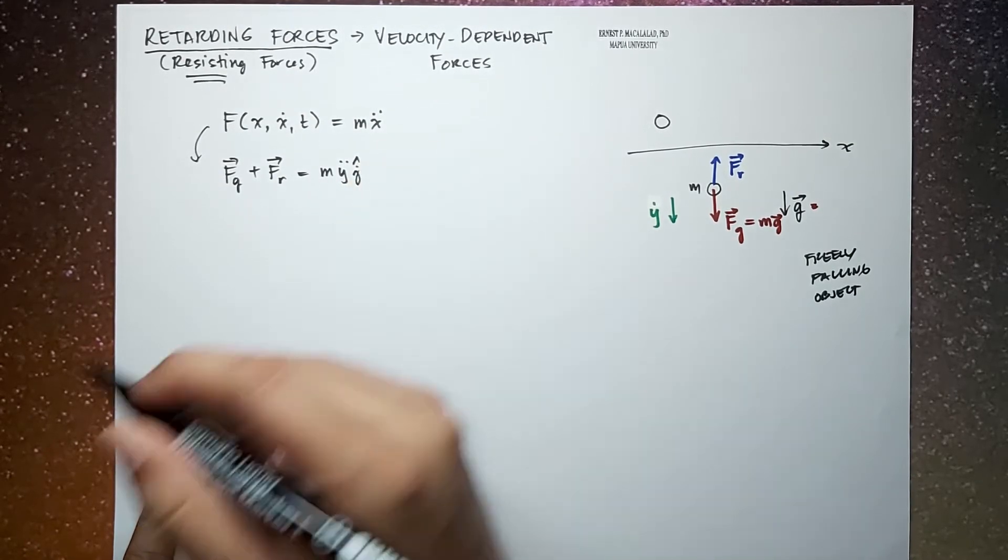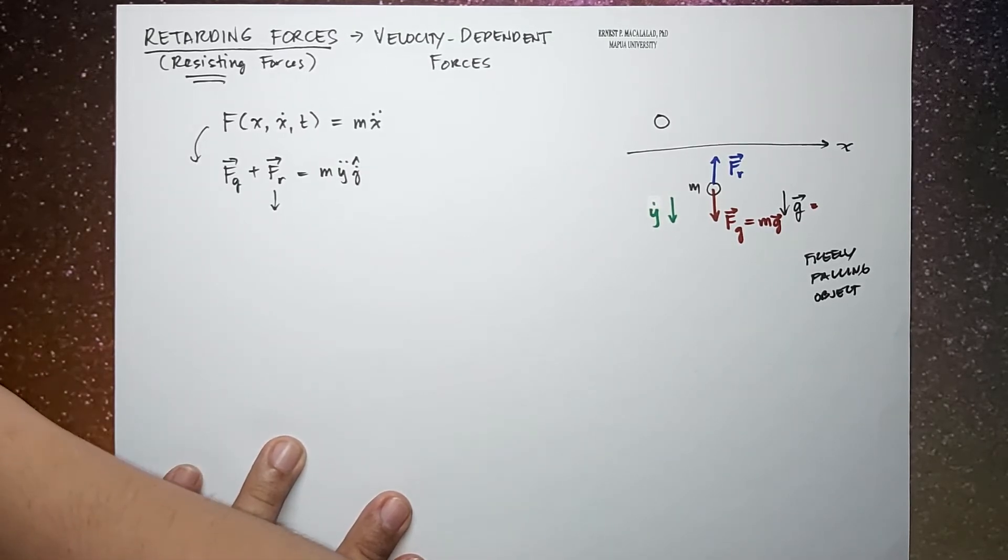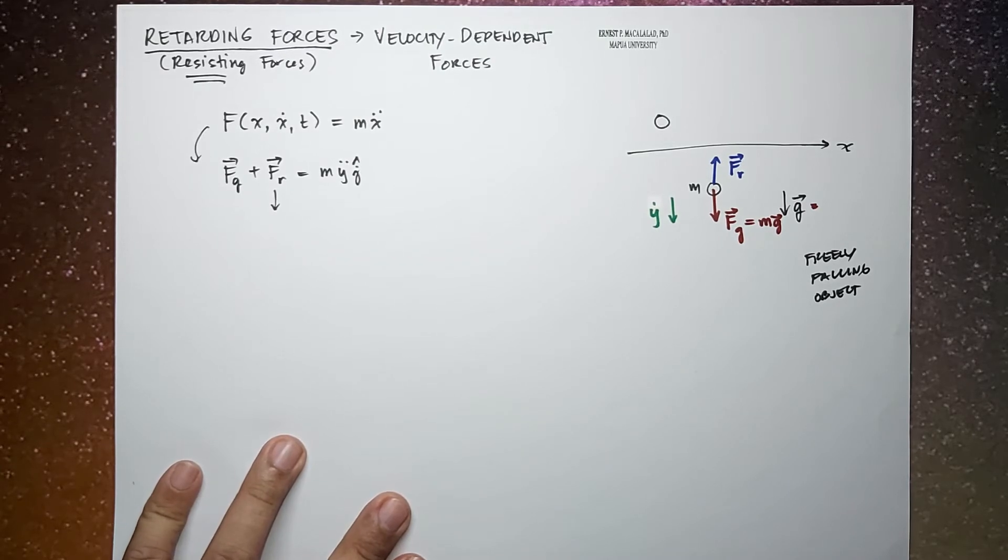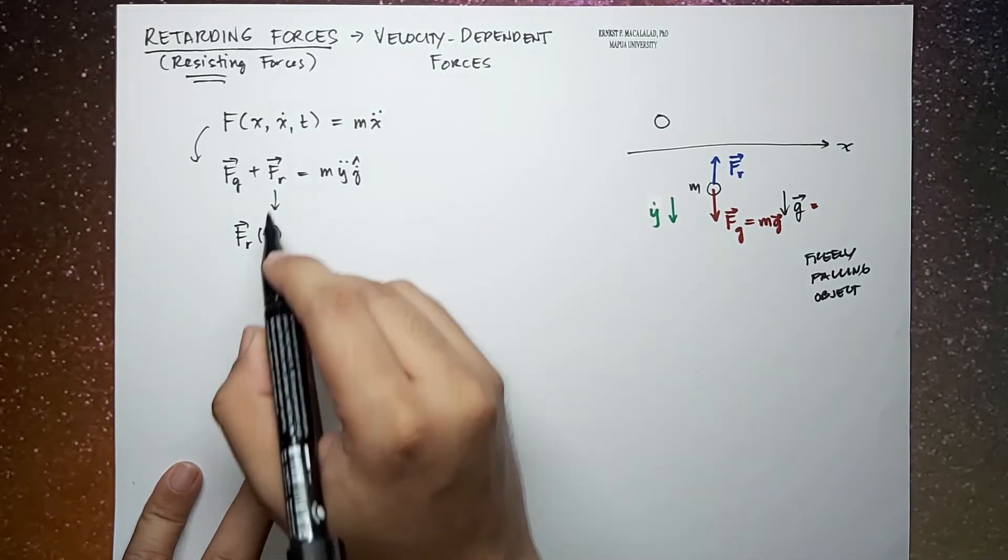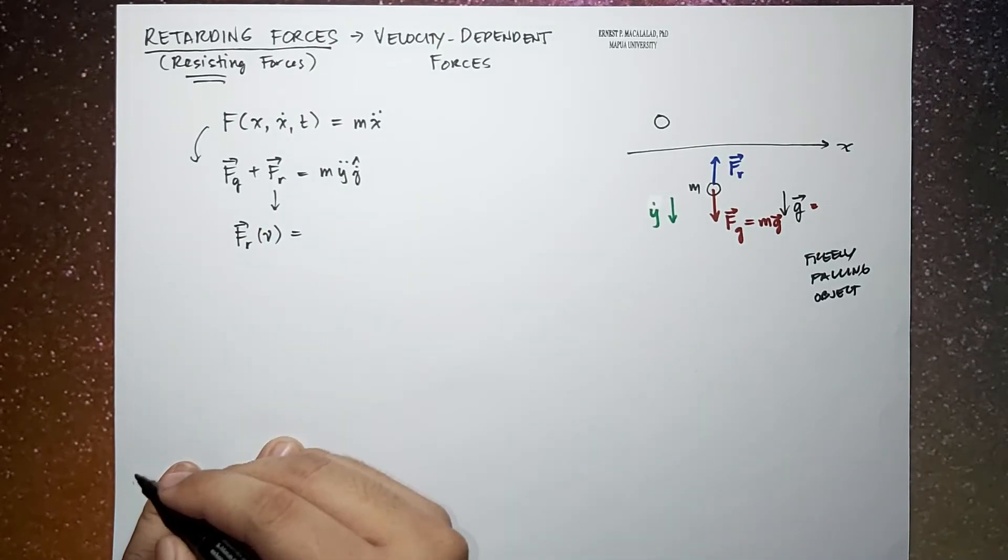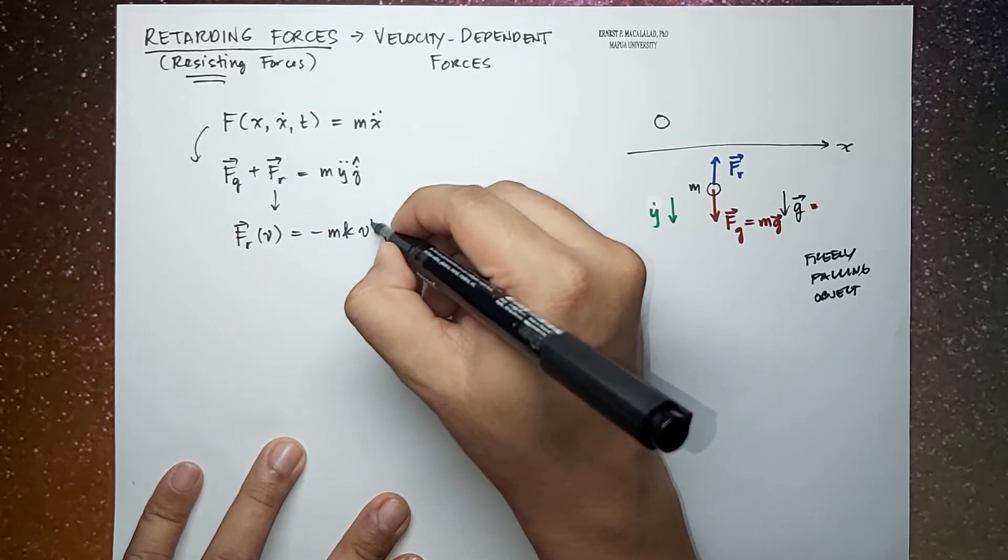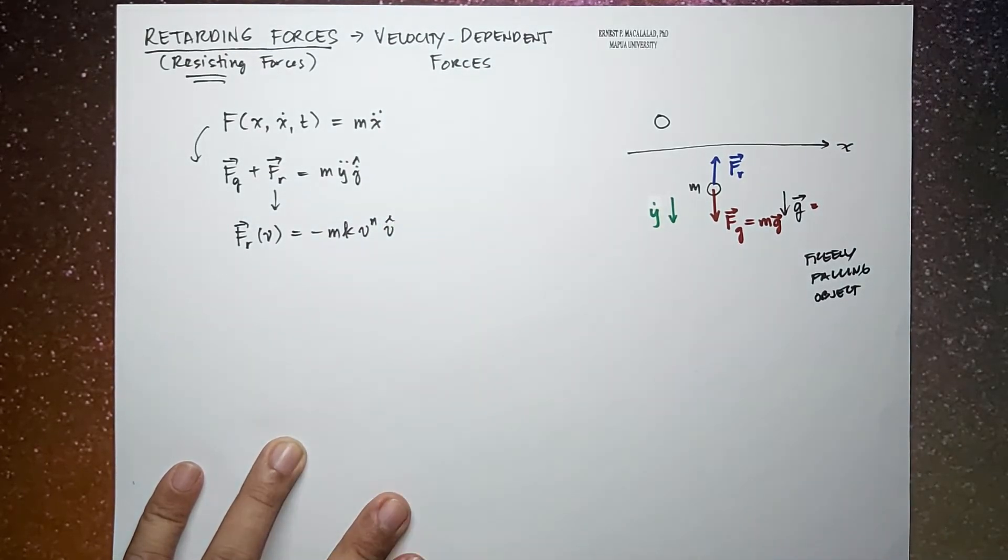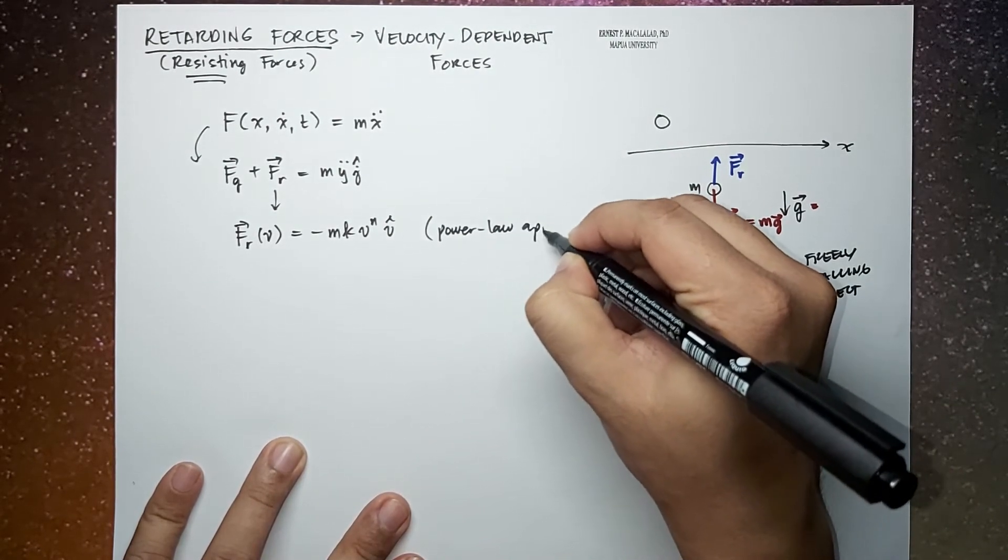Now for most cases, the retarding force is a function of speed, and usually it is proportional to the power of the speed. Fr is a function of speed, and this is equal to negative m k v^n v hat. So this is what we call a power law approximation.